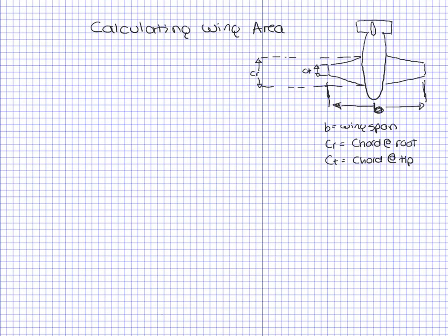We have chord at the tip right here and chord at the root. Some airplanes have rectangular wings, meaning that the chord at the tip is the same as the chord at the root.